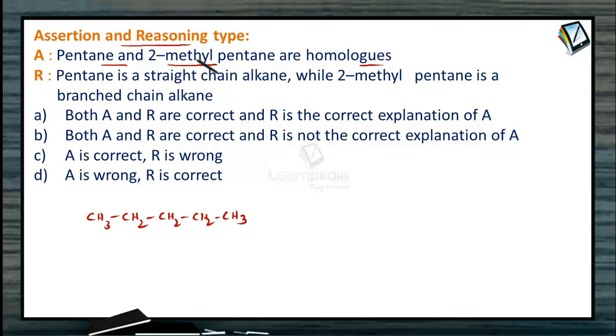Then let us write the structure of 2-methylpentane. It is almost the same but on the second carbon, one of the hydrogens is replaced by a CH3 group and the difference between these two is only one CH2 group.